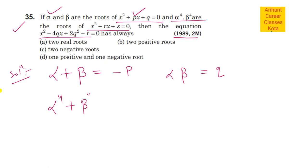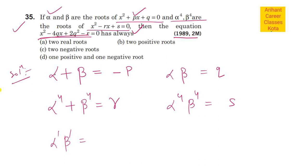अगली equation आपको दे रखी है - यह second equation. इसके लिए sum of roots: alpha⁴ + beta⁴ = r के equal हो रहा है. और alpha⁴ × beta⁴ का product = s के equal है. फिर alpha dash और beta dash अगर आप तीसरी equation के roots मान लो, तो इनका product = 2q² - r के equal हो जाएगा.